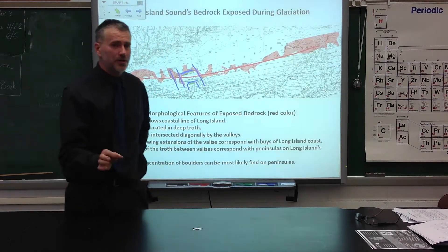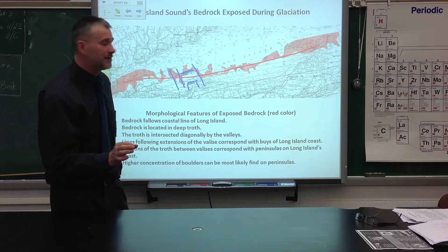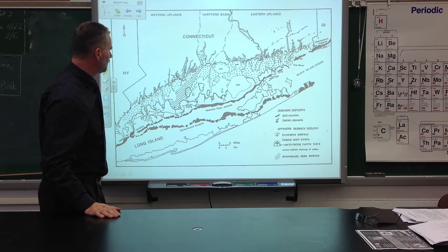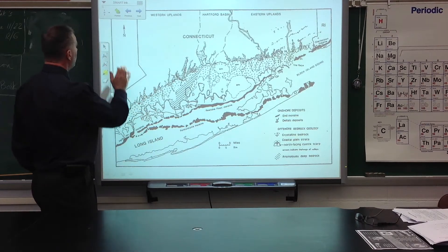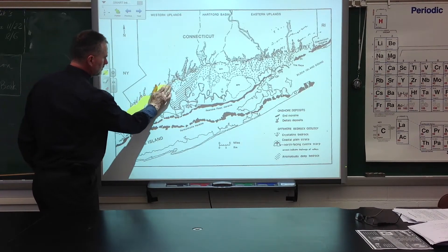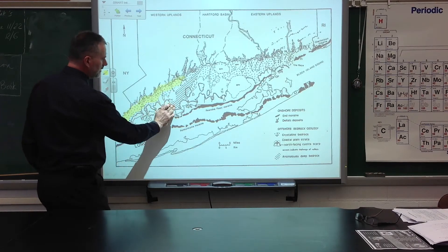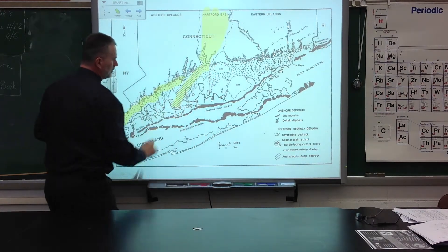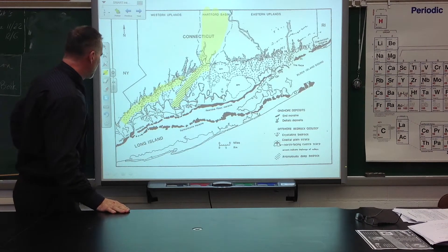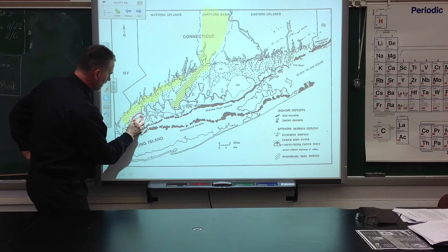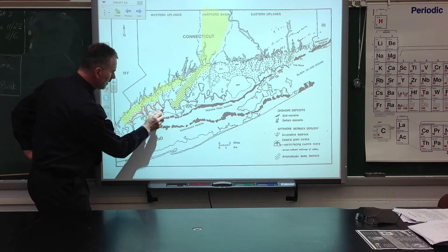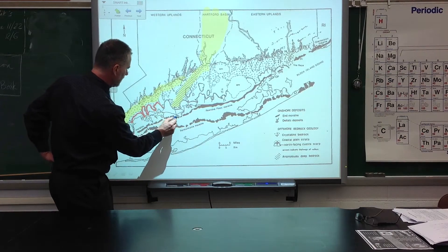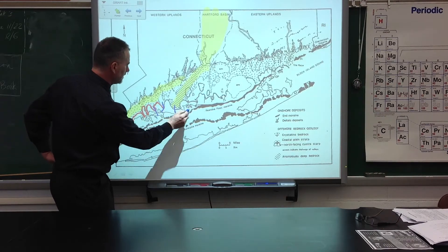We're going to take one more look at the map of Long Island Sound, but from different studies — studies by Lewis and Stone. On the basis of seismic reflection, they produced this map. What we see here is the bedrock. We see the deep bedrock which runs as an extension of Hartford Basin, and it's filled with the same sediments, probably, as Hartford Basin. We also see Cretaceous sediments. And the thing most important for our investigation: we have the location of valleys which are carved in those Cretaceous sediments, right here.